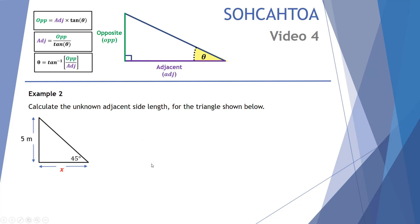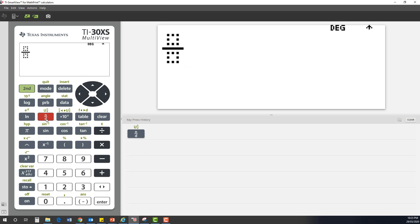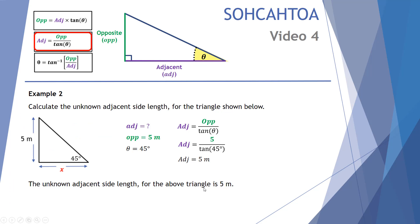In example two, the adjacent side length is the unknown. We have the opposite side length as five meters and the angle as 45 degrees. We select the equation: adjacent equals opposite divided by tan of theta. Substituting in: adjacent equals five divided by tan of 45. Using the fraction button on the TI calculator — five on the numerator, tan of 45 on the denominator — gives us five meters. So the unknown adjacent side length for this triangle is five meters.